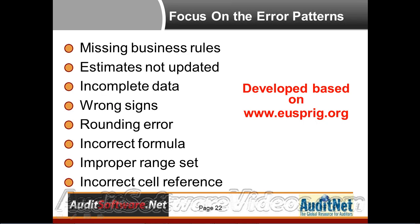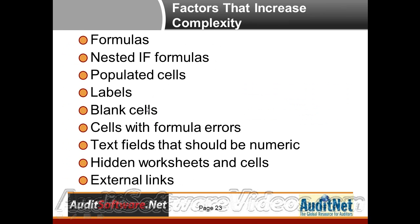Now we get into incorrect formulas, improper ranges that are set, and incorrect cell references — where you're linking to a cell that moved or doesn't exist anymore, creating an error in your spreadsheet. When you look at a spreadsheet, these are the things that I think lead to more complexity. So once you've decided this is a spreadsheet that has complexity in it, we need to think about formulas and nested-if formulas.